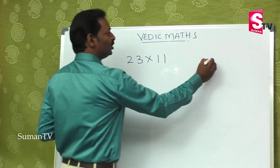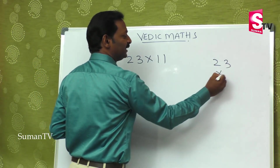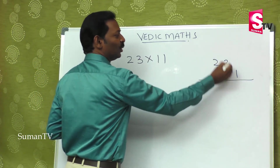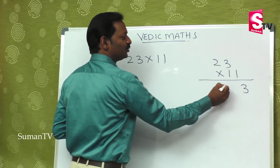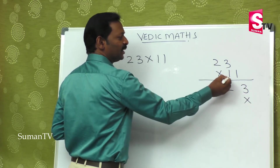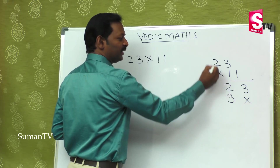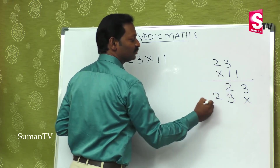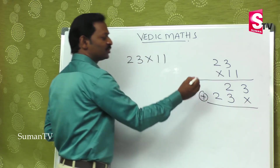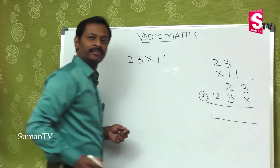Take 23 multiplied by 11. The steps are: 1×3 gives 3, 1×2 gives 2, leave one place, again 1×3 gives 3, 1×2 gives 2, then add. So there is a 1st step, 2nd step, and 3rd step.